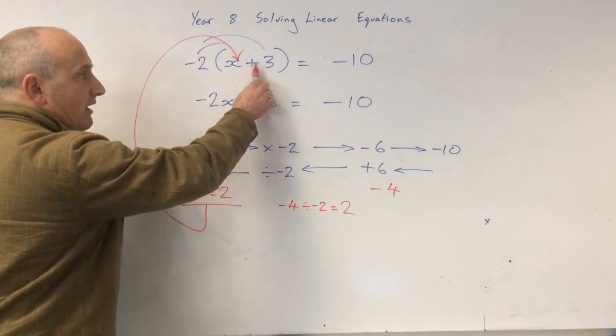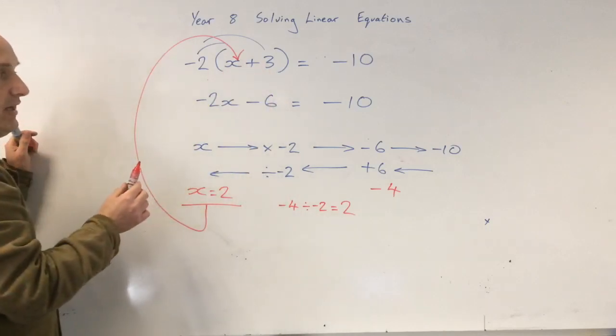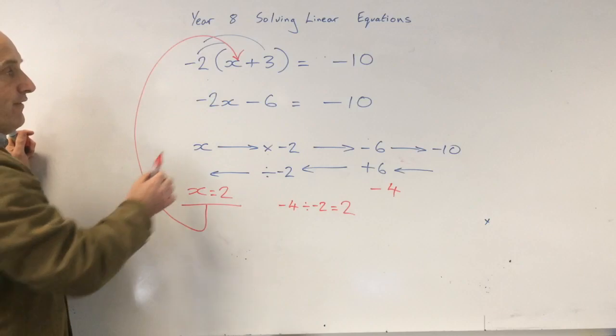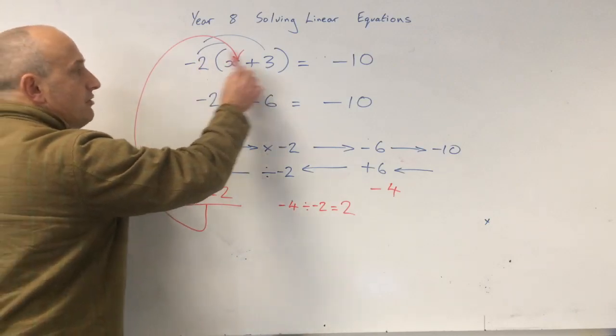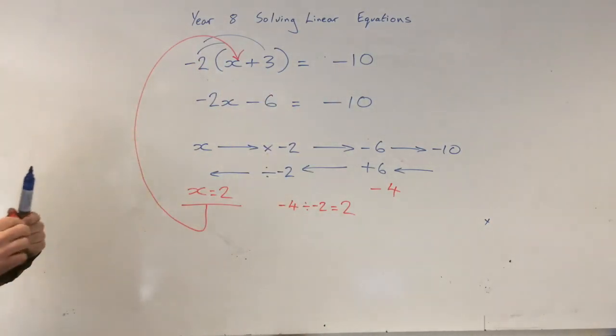2 add 3. 2 add 3 is 5. 5 times minus 2 is minus 10. Yes. It works. Okay. Wonderful. Good luck.